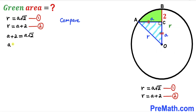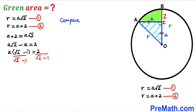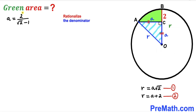So we get a√2 − a = 2, and since a is common, we factor it out: a(√2 − 1) = 2. Dividing both sides by (√2 − 1) isolates a, giving a = 2 / (√2 − 1). Now we rationalize this denominator by multiplying by its conjugate (√2 + 1) over (√2 + 1).